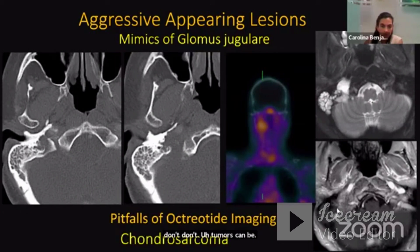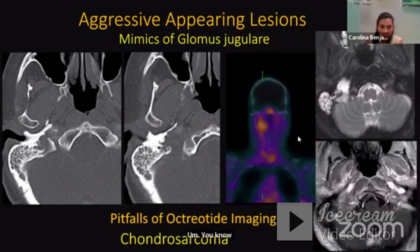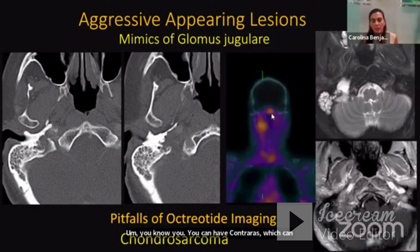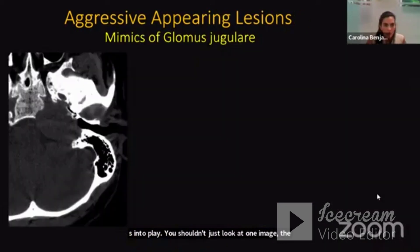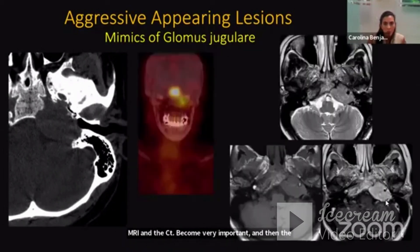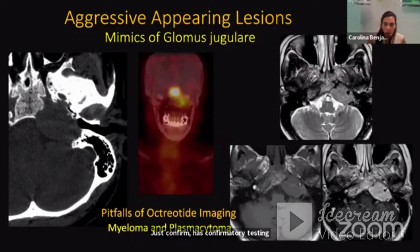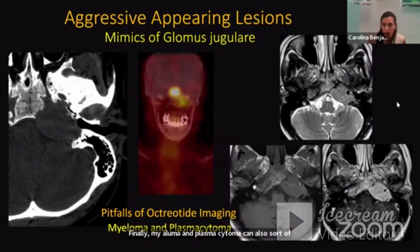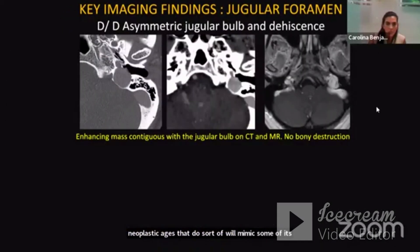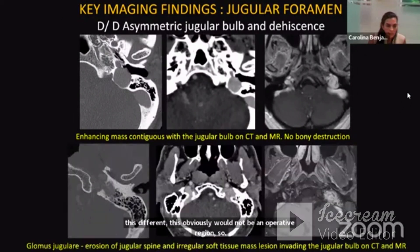Aggressive-appearing lesions that mimic glomus jugulare tumors include chondrosarcomas, which can also shine brightly on octreotide scan. This means somatostatin imaging, while helpful, can also be confusing — you must use all imaging modalities together. MRI and CT remain very important, with other modalities as confirmatory testing. Don't forget urine and serum analyses for lab studies. Myeloma and plasmacytoma can also mimic jugular foramen lesions — these are not operative targets, so keep them in mind.